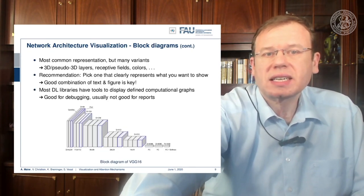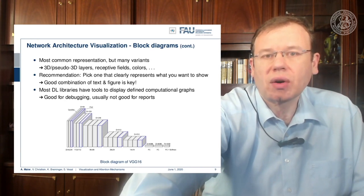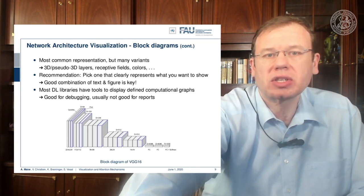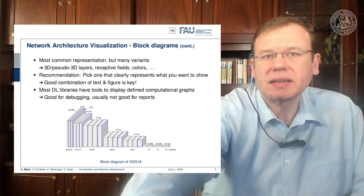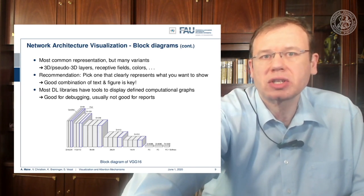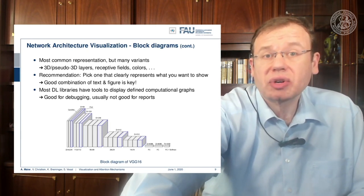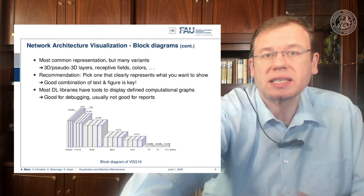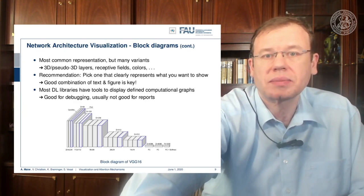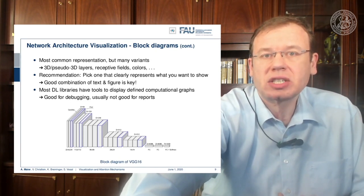There are also block variants — for example the visualization of VGG where the authors wanted to show the decrease in spatial dimensionality with an increase in the interpretation dimension. Only 3D blocks or cubes are used to convey the idea of switching from spatial dimension to interpretation. There are many ways to visualize things; you should pick the one that best shows the effect you consider important and add a good textual description, since the key is the combination of text and figure.